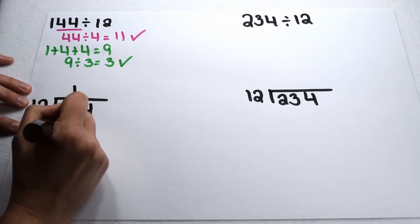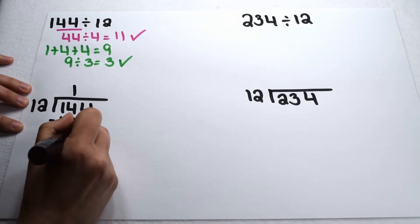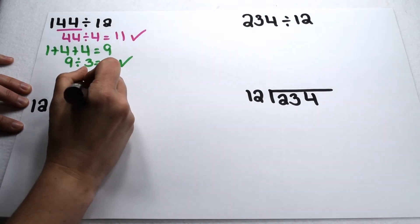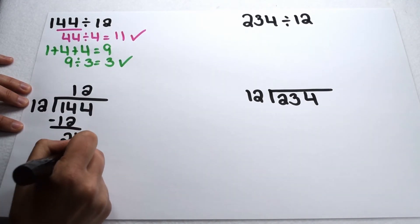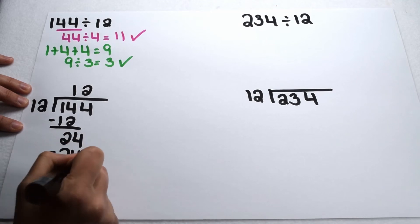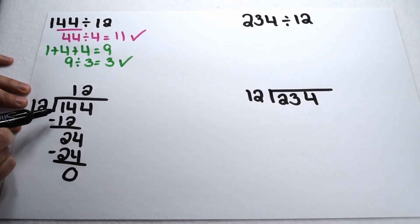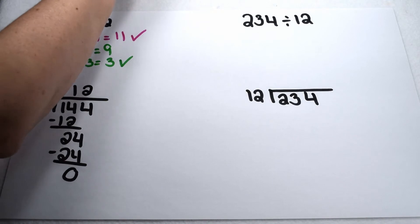So I should be able to divide 144 by 12 with no remainders. 12 goes into 14 once. Subtract my 12 — 14 minus 12 is 2. Bring down my 4. 12 goes into 24 twice. And sure enough, when we subtract that out, I have nothing left over. So 144 divided by 12 gives me exactly 12.